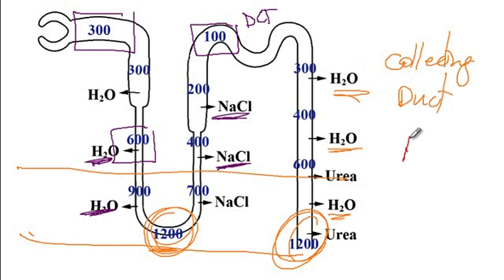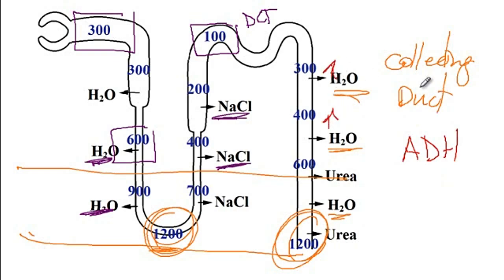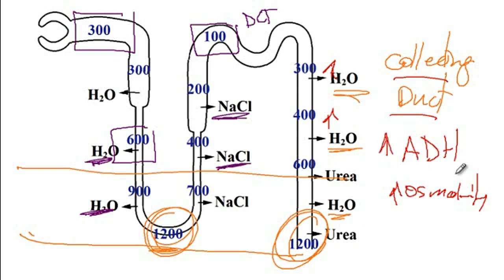The rate of water reabsorption depends on antidiuretic hormone (ADH), also called vasopressin, secreted by the posterior pituitary gland. As ADH concentration increases, there is increased permeability of the collecting duct and more water is reabsorbed, so urine osmolarity increases. Conversely, lower ADH concentration means decreased permeability and less hypertonic urine.